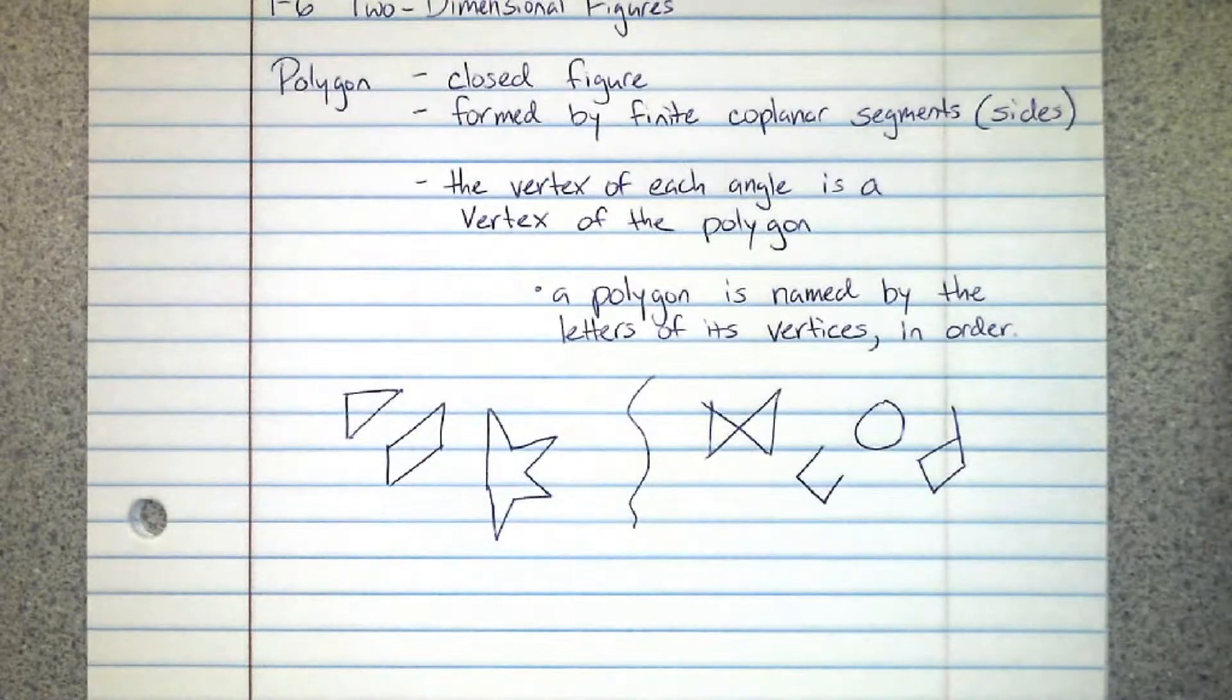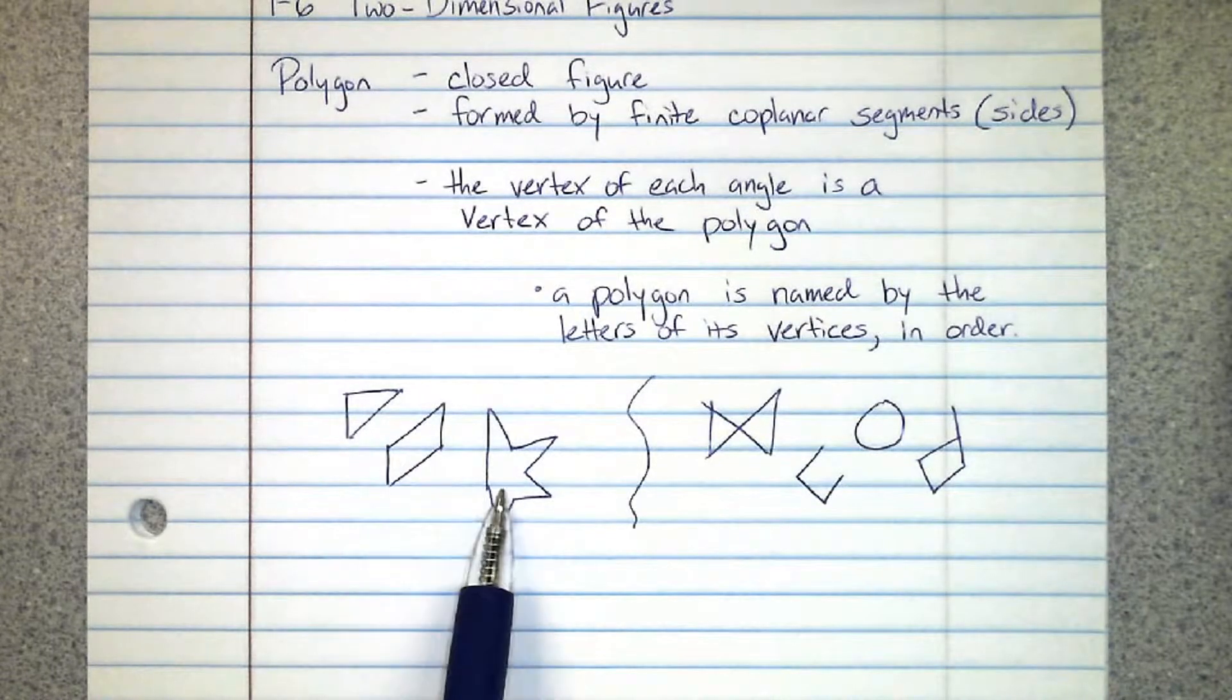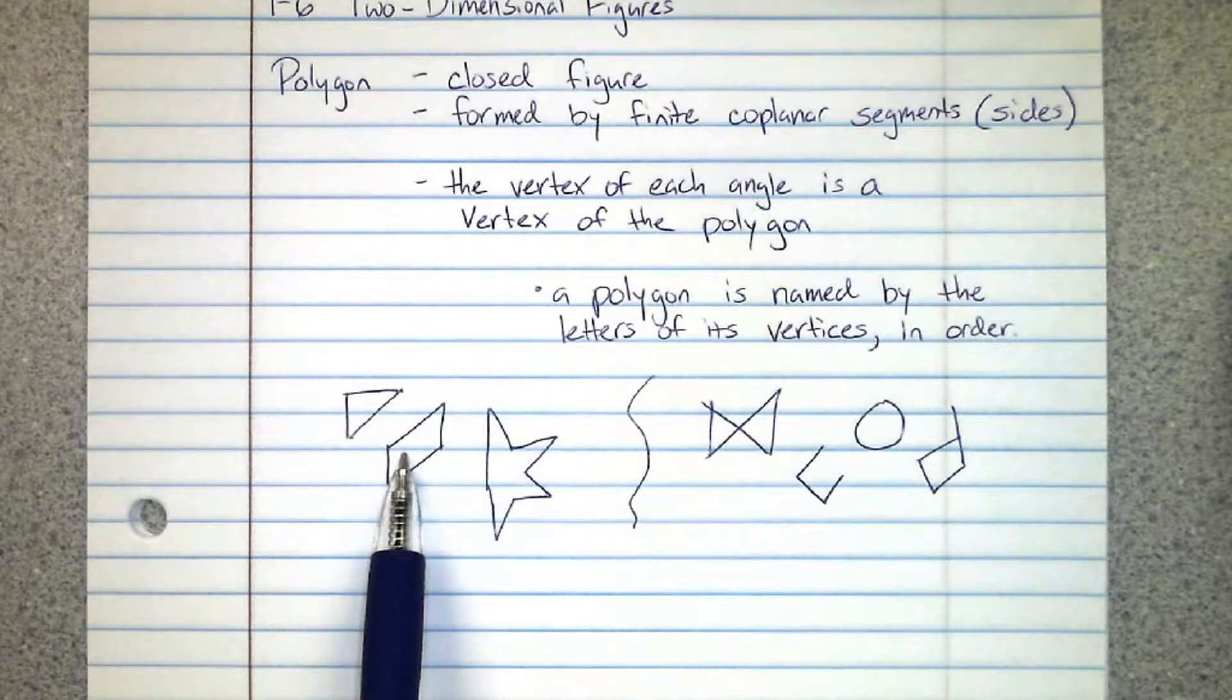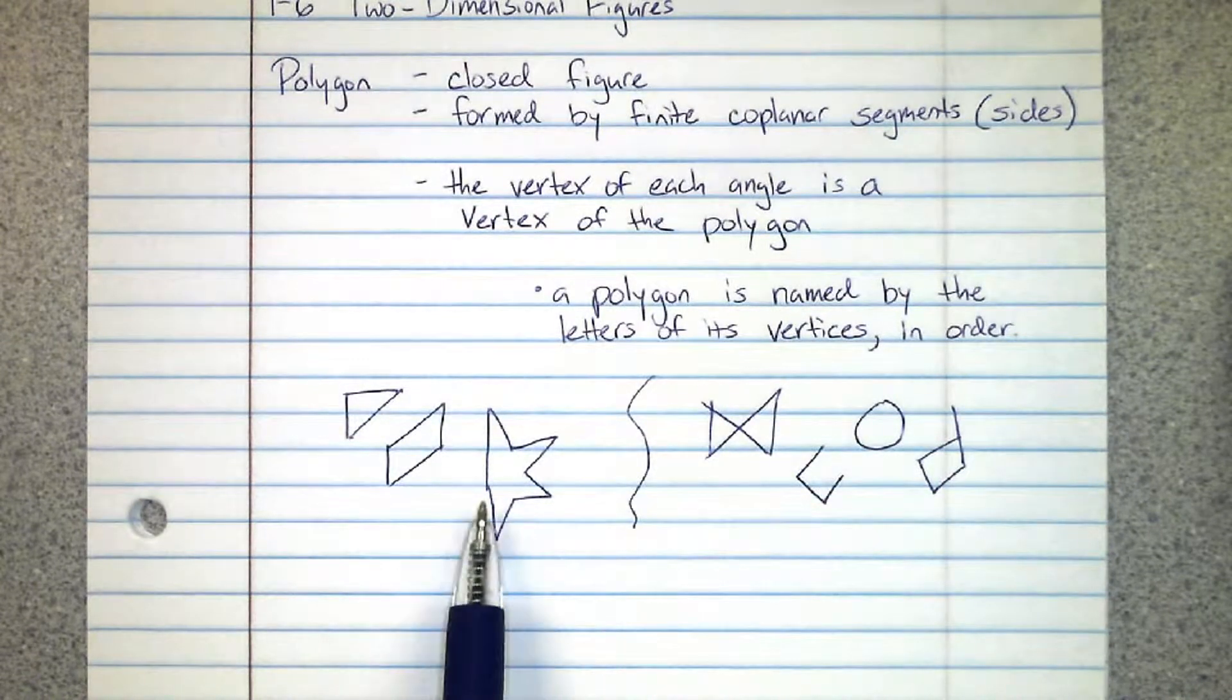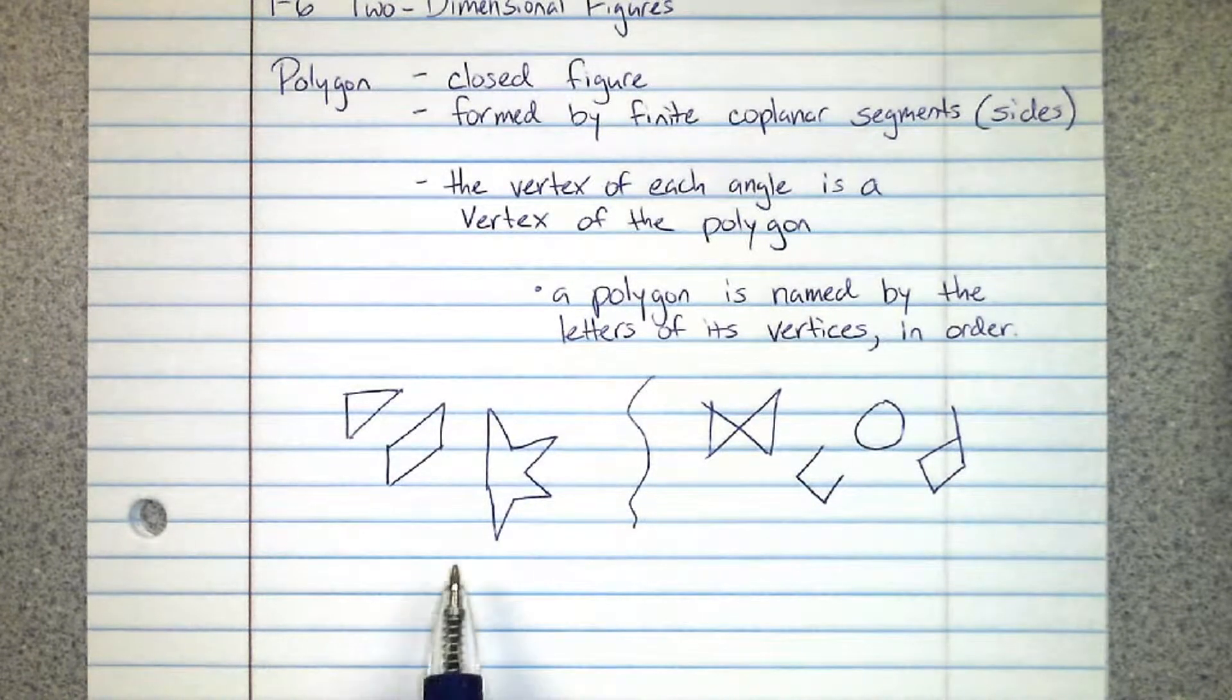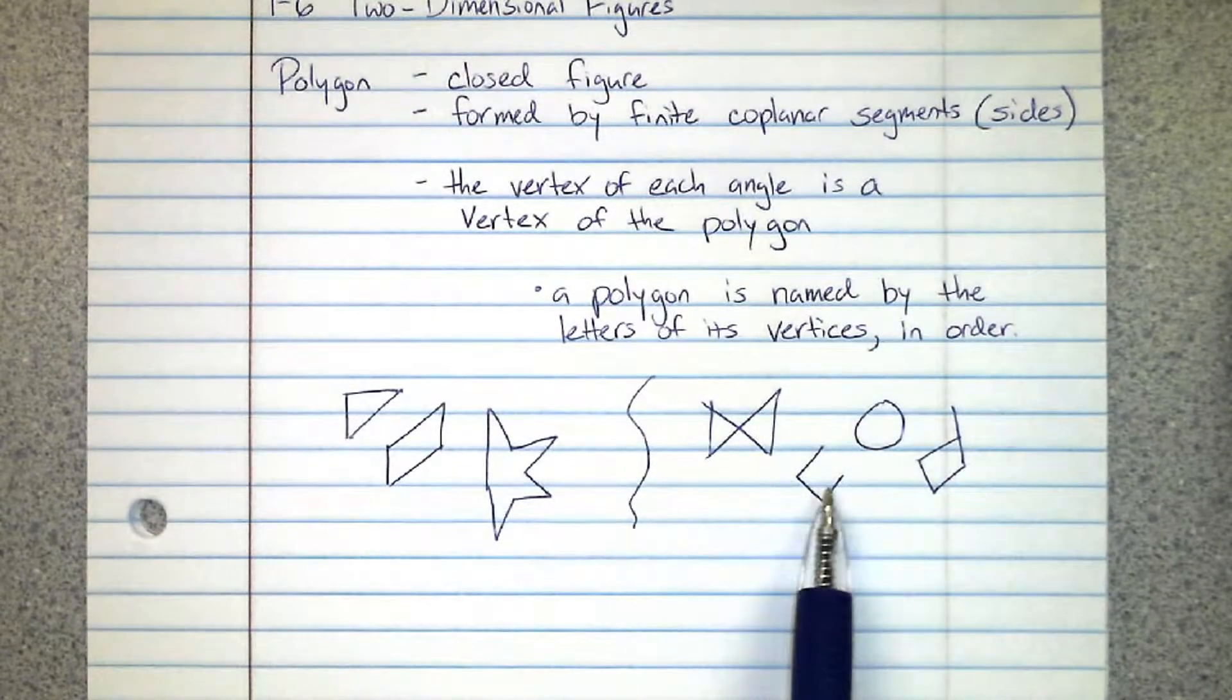These are examples of polygons - they're closed figures formed by coplanar segments. Doesn't matter if you don't recognize the shape, as long as it's a closed figure with no overlap, you're good.